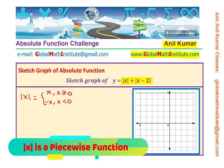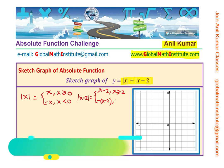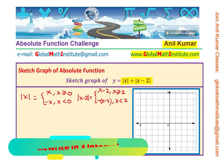As for absolute value of x minus 2, that is also a piecewise function. It can be written as x minus 2 for x greater than or equal to 2, or negative of x minus 2 when x is less than 2. So the absolute value function can be different in different intervals.